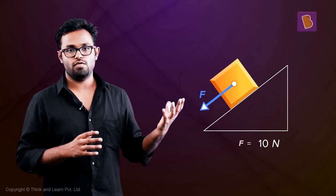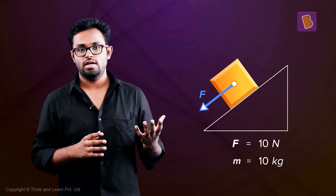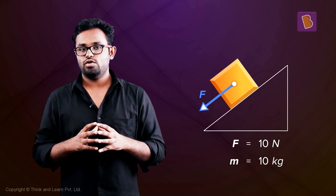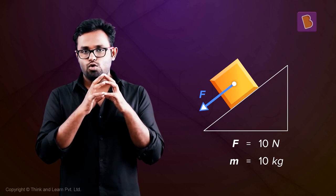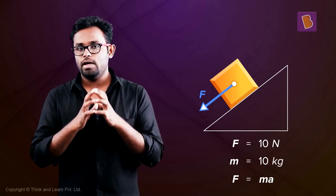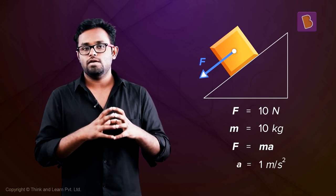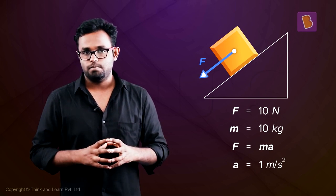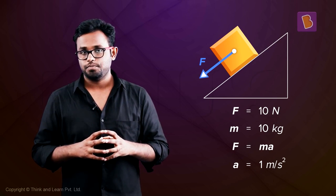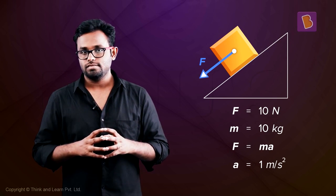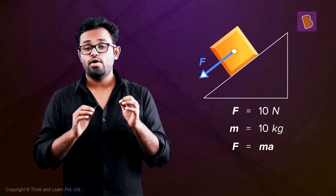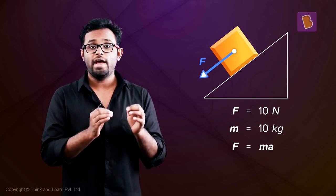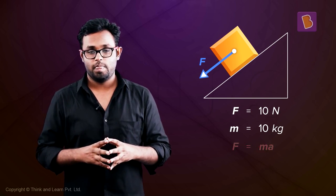Now let's see what happens in this case. The same question basically — you have a force, you've got the mass. What do you think will be the answer? Again, if you do F equals MA, A will be equal to 1 meter per second squared, right? No, that is not so because, as I told you, F is not equal to MA.